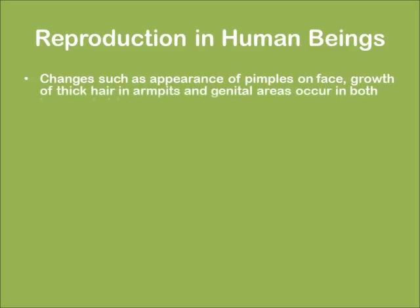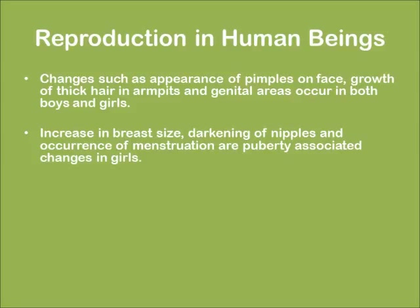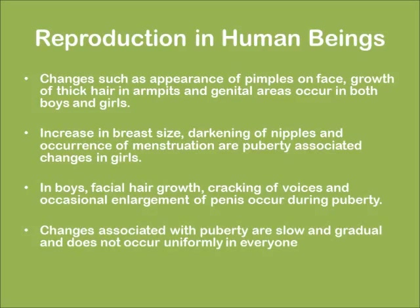Changes such as appearance of pimples on the face, growth of thick hair in armpits and genital areas occur in both boys and girls. Increase in breast size, darkening of nipples, and occurrence of menstruation are puberty-associated changes in girls. In boys, facial hair growth, cracking of voice, and occasional enlargement of the penis occur during puberty. Changes associated with puberty are slow and gradual and do not occur uniformly in everyone.